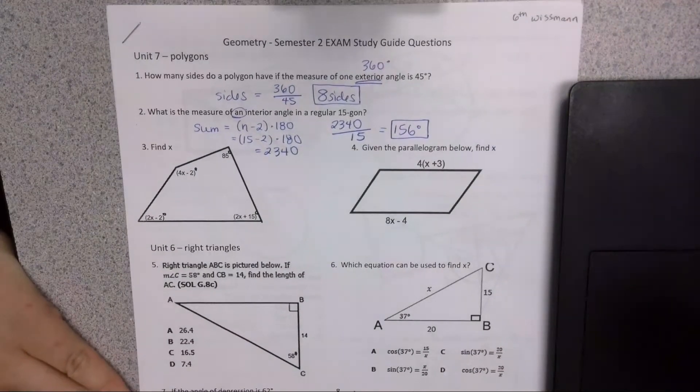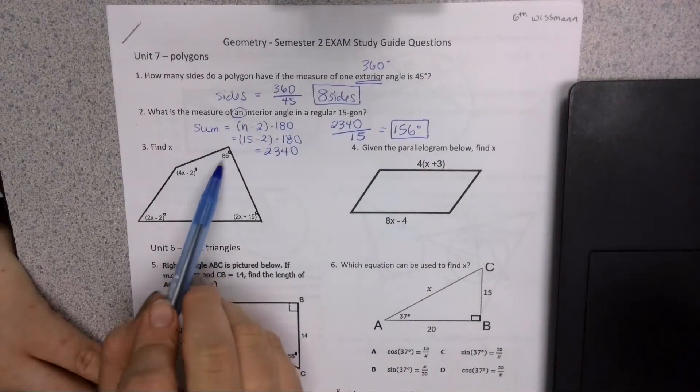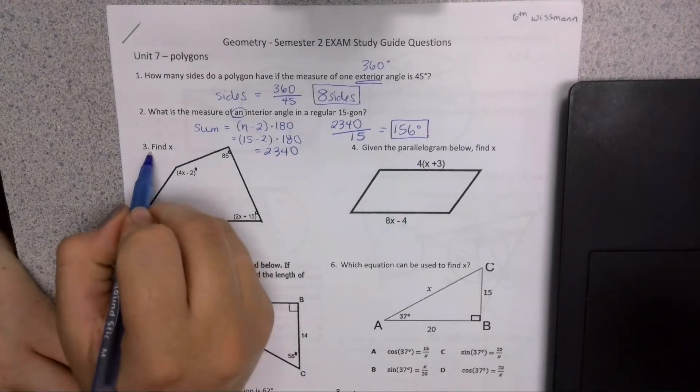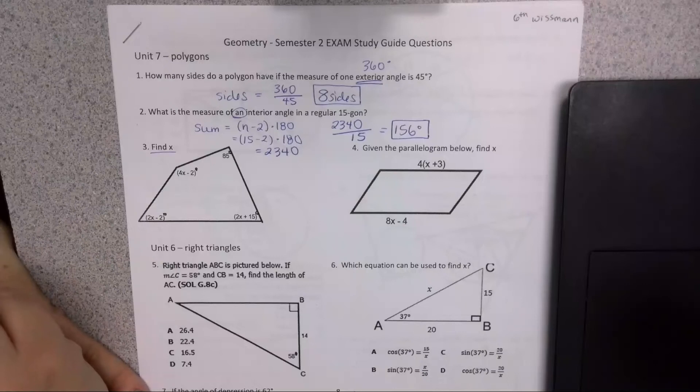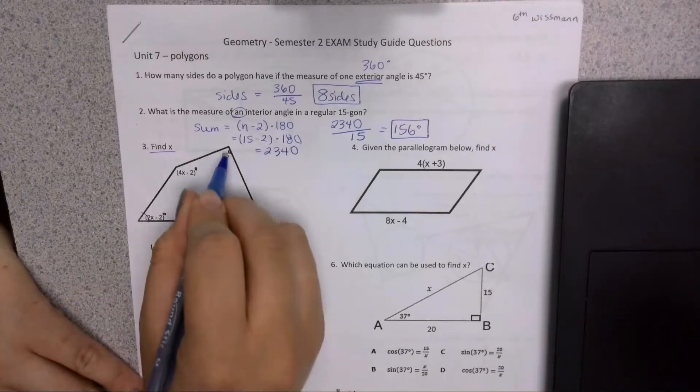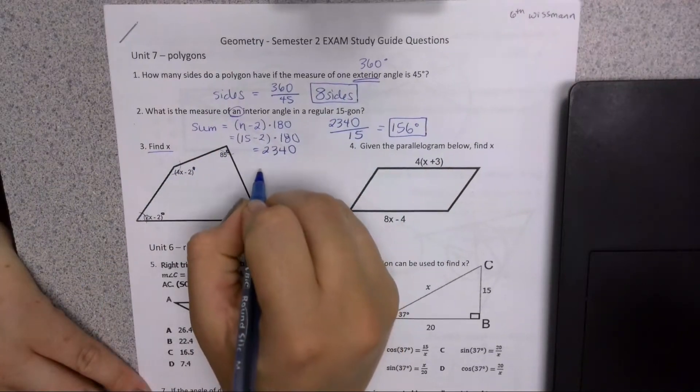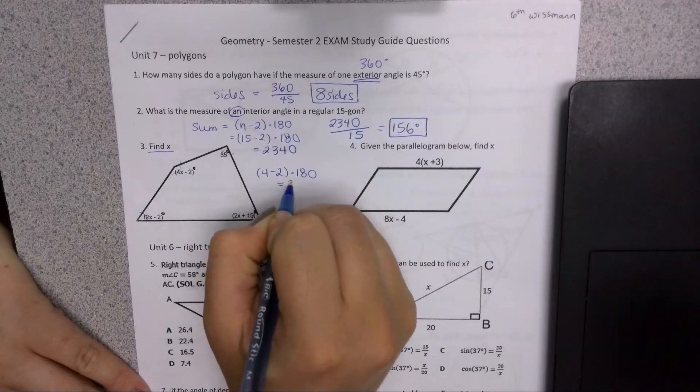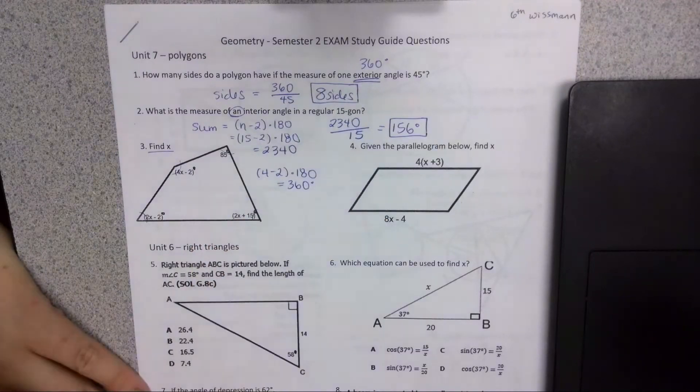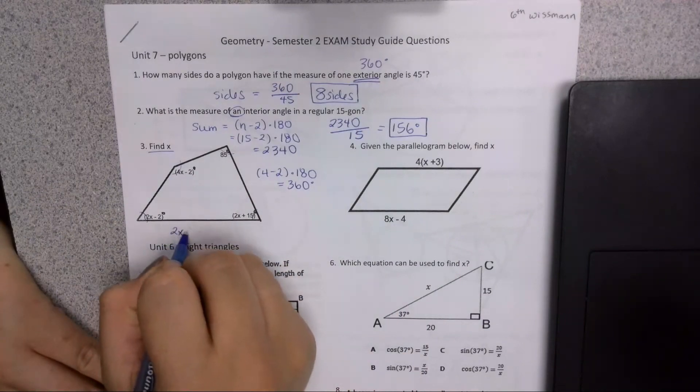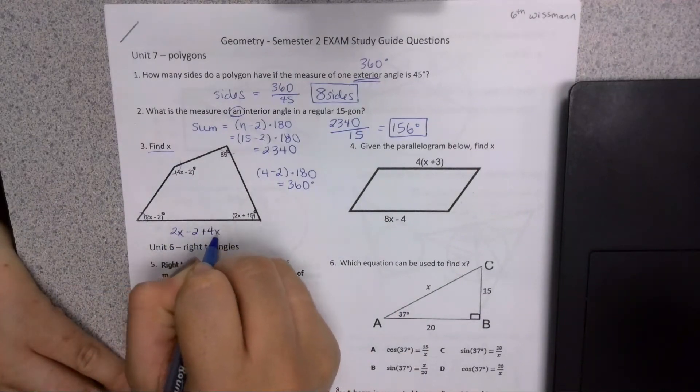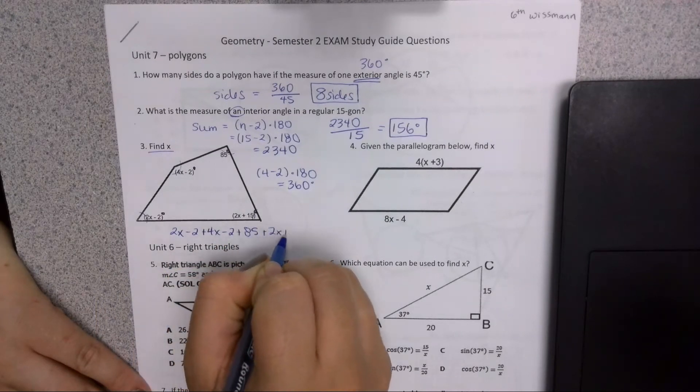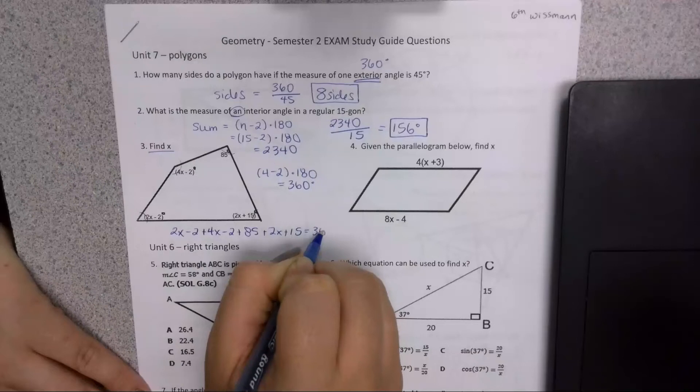If we have each angle on the inside of a polygon, and we need to know what x equals, we're going to add up each of these angles, and since there are four angles, we know the total has to be 360. So we're going to say 2x minus 2 plus 4x minus 2 plus 85 plus 2x plus 15 equals 360 degrees.